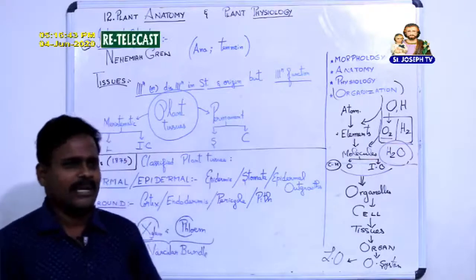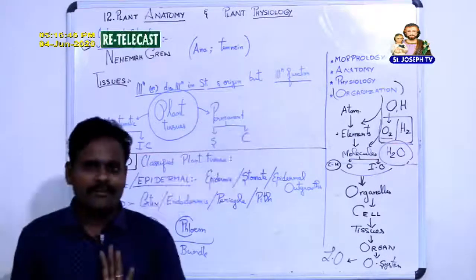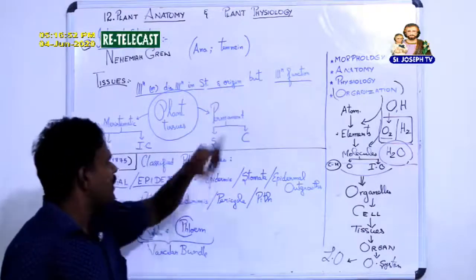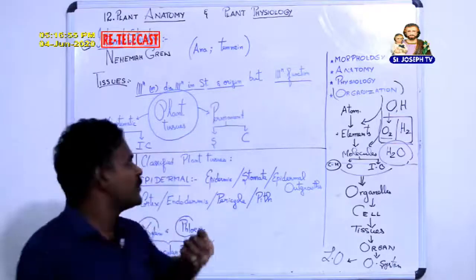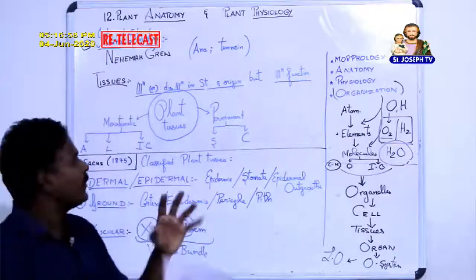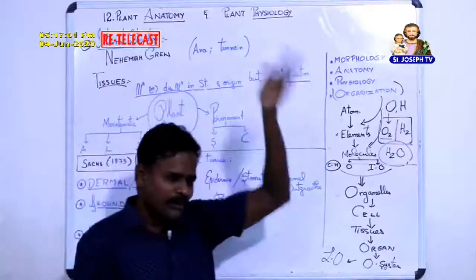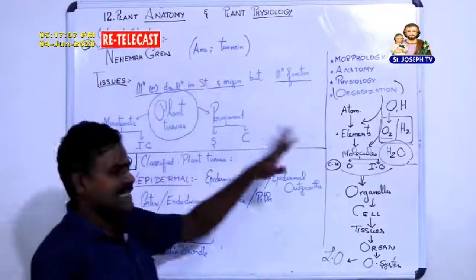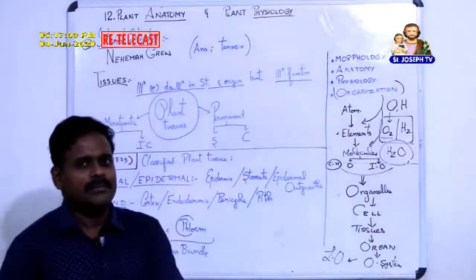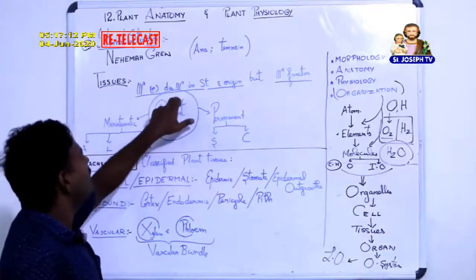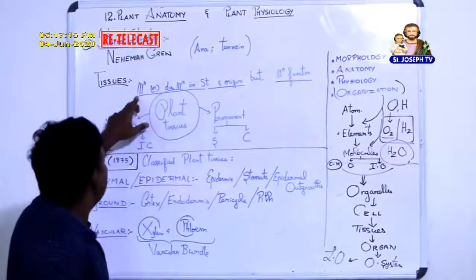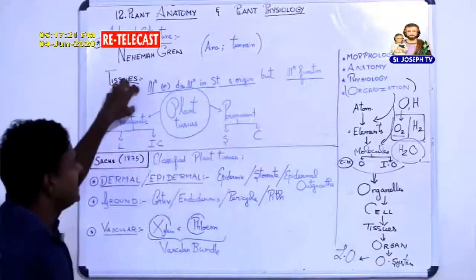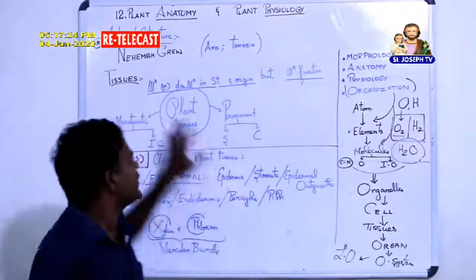Again, a tissue is a collection or group of cells with similar or dissimilar structure and origin — though in lower classes you may have learned it is always similar. In this 10th standard book it is clearly stated: they may be similar or dissimilar in structure and origin. But all the cells in a tissue will be similar in function. That is what we actually call a tissue.